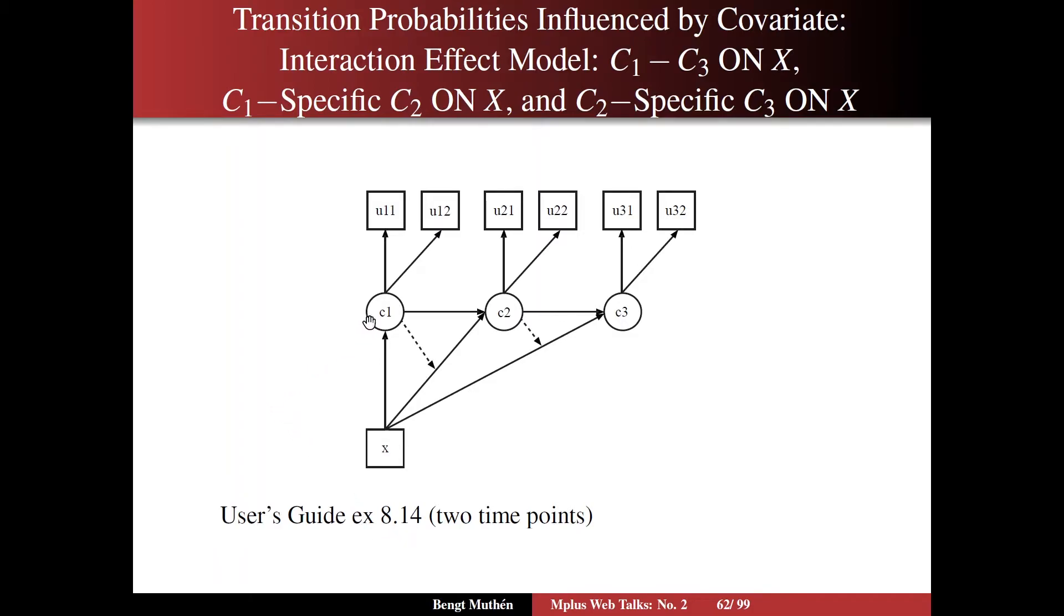So here you have then the influence from X on C2, that is C2 regressed on X, is C1 specific. You have this broken arrow showing that C1 influences this slope. That is, you have an interaction between X and C1. Same thing, the regression of C3 on X varies, that slope varies across the C2 classes. So we are saying we have a C1 specific C2 on X and a C2 specific C3 on X. So that's the more complex model, which you don't always need.